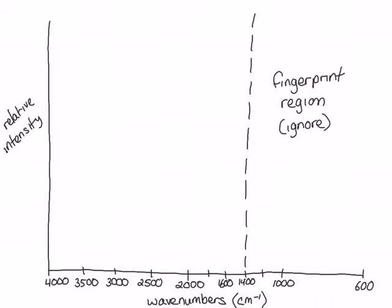One of the most obvious stretches in an IR spectrum is the stretch due to an oxygen-hydrogen bond. This shows up as a broad peak between 3500 and 2500 wavenumbers. Peaks due to the nitrogen-hydrogen bond also show up in this region, but they tend to be sharp.